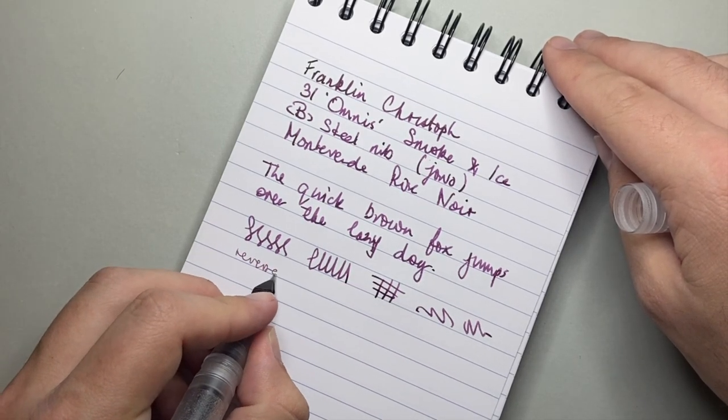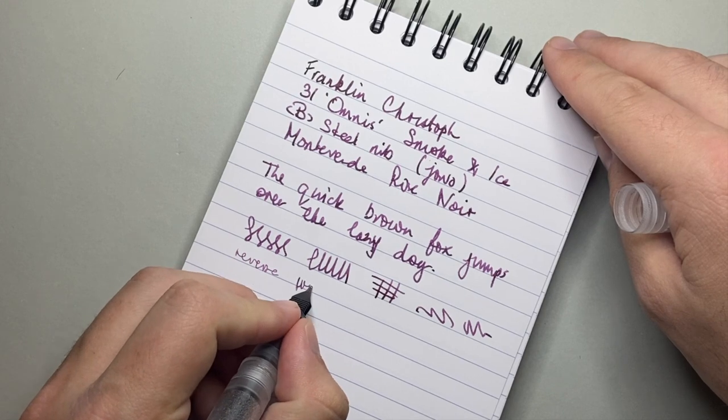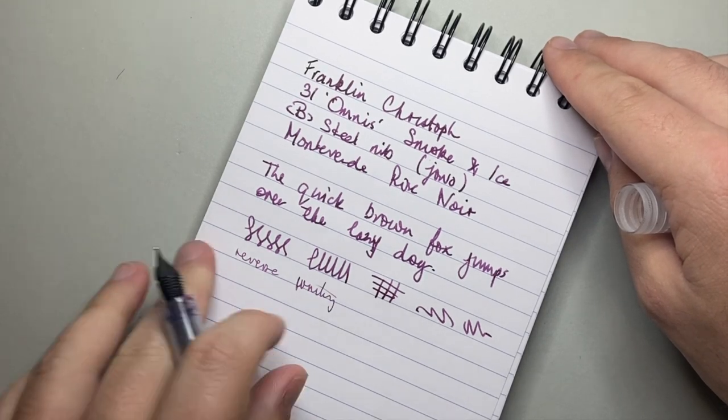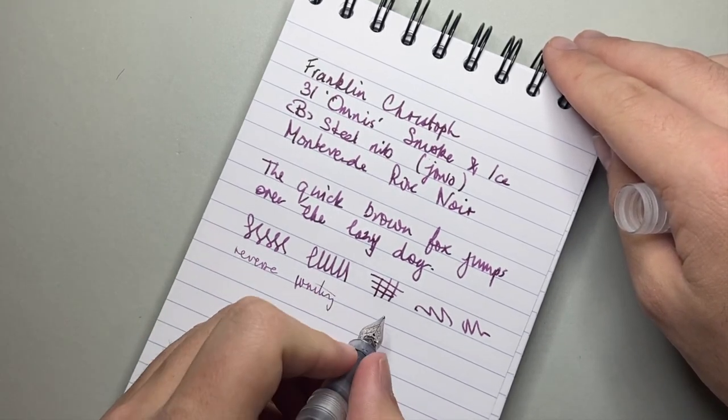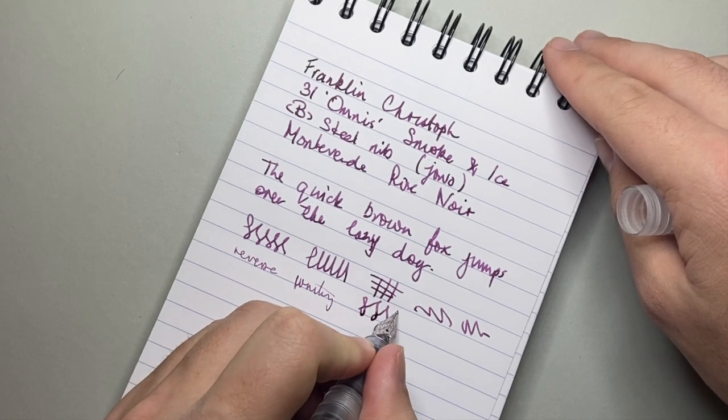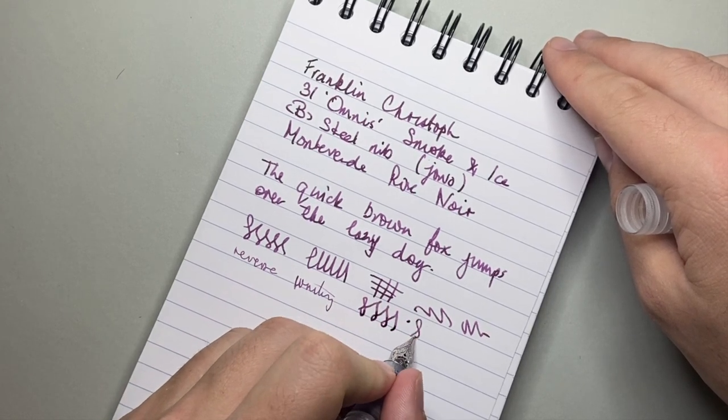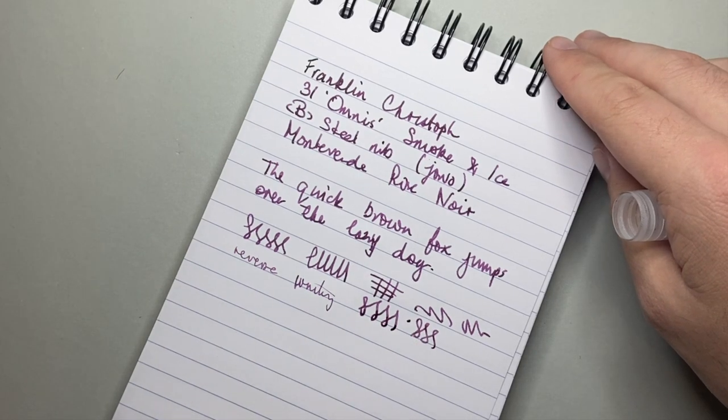Reverse writing, it's smooth, but it's very dry and not a pleasant experience necessarily. Flex-wise, no, just put more ink down. It's a rigid nib. It's not going to open up for you for flex.